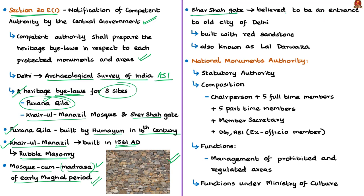The Shersha Gate is located near Kharul Manazil. This gate is believed to be an entrance to the old city of Delhi, built by Shersha. The gate is largely built with red sandstone and is therefore also known as Lal Darwaza — 'Lal' meaning red and 'Darwaza' meaning door or gate in Hindi.